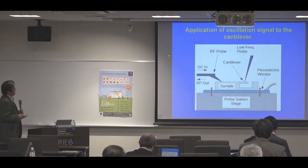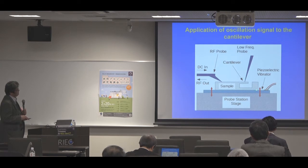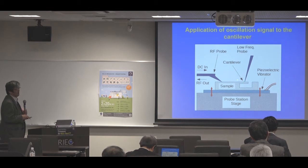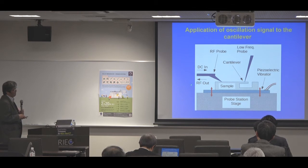To demonstrate the delta-sigma modulation concept, we performed an experiment with this setup. The fabricated circuit is placed on a piezoelectric vibrator on the probe station, and a low-frequency microprobe was set to touch the cantilever — this induces strain on the RTD when the piezoelectric vibrator moves. DC bias and RF output are taken from here, and the output RF signal was sampled by a storage oscilloscope.